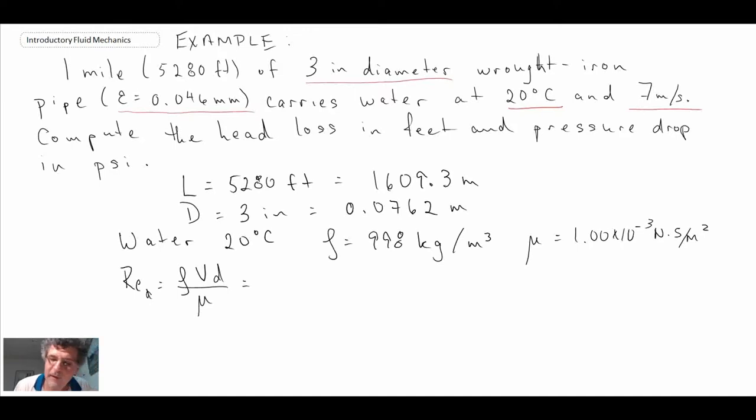Substituting in the values, we have all the values for the Reynolds number, and we find that we're at 5 times 10 to the 5. So 532,000 is the Reynolds number, and therefore that's greater than 2,300, and we have turbulent flow.